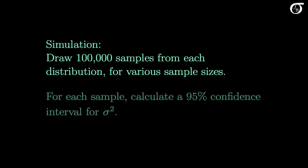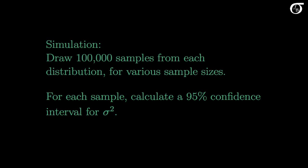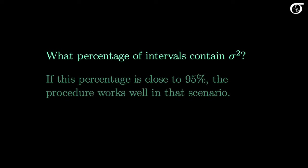In these simulations I'm going to draw 100,000 samples from each distribution for various sample sizes. For each sample I'm going to calculate a 95% confidence interval for sigma squared, based on the assumption of a normally distributed population. Then we'll look at the question: what percentage of intervals actually contain sigma squared? If the percentage is close to 95%, the procedure works well. If the percentage is far different from 95%, the procedure is not working well and our stated results may be misleading.